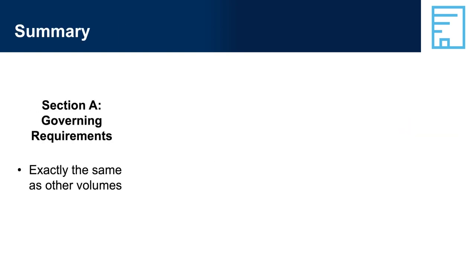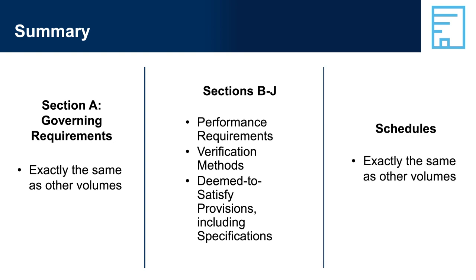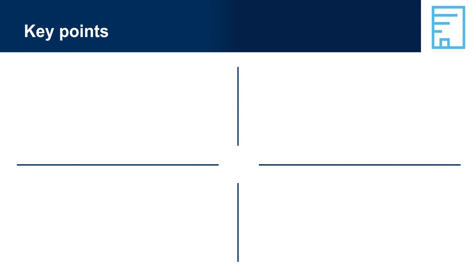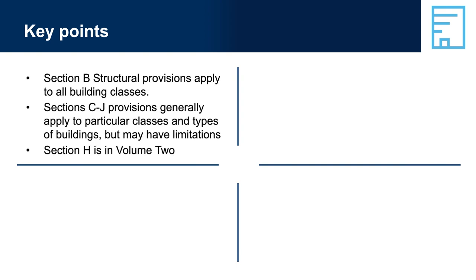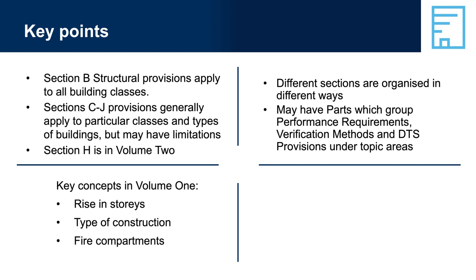Summary: Section A — Governing requirements, exactly the same as other volumes. Sections B to J — Performance requirements, verification methods, deemed-to-satisfy provisions including specifications. Schedules — exactly the same as other volumes. Key points: Section B structural provisions apply to all building classes. Sections C to J provisions generally apply to particular classes and types of buildings but may have limitations. Section H is in Volume 2. Key concepts in Volume 1: rise in stories, type of construction, fire compartments. Different sections are organised in different ways and may have parts which group performance requirements, verification methods and DTS provisions under topic areas. Additional non-mandatory guidance is available on the ABCB website: Guide to NCC Volume 1 and other handbooks on specific topics.